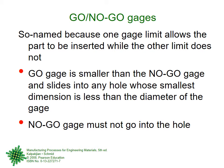Let us go through each of the limit gauge types. Go/no-go gauges are so named because one gauge limit allows the part to be inserted while the other limit does not. One is made at 1.1 inches so the part should go through it, and the other is made at 0.9 inches — that is the lower limit — so the part should not pass through it. These are two pieces of the gauge in one.